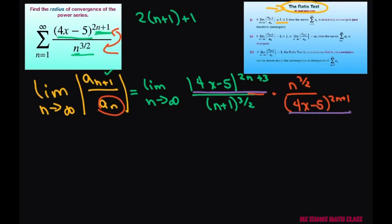For this piece we have absolute value of 4x minus 5 to the power of 2n plus 3. Since this is in the denominator, you subtract the exponents. They're the same, minus 2n plus 1. Now what's going to happen is the 2n's cancel and you're going to get absolute value of 4x minus 5 squared.